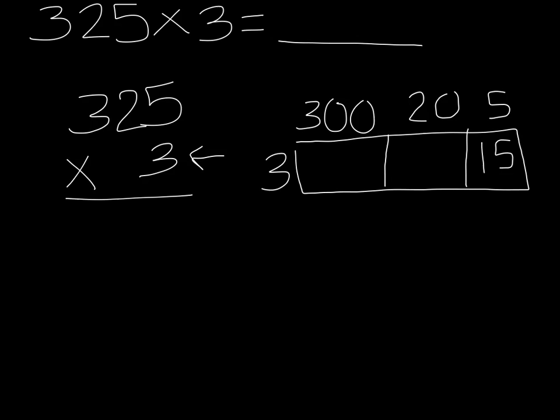The next step is to find the area of this box right here. And I'm going to do that by multiplying the length, which is 20, times the width, which is 3. In order to do that, we've learned that really awesome strategy that we can multiply 2 times 3 and get 6, and then we can tack on that 0. And that gives us 60.